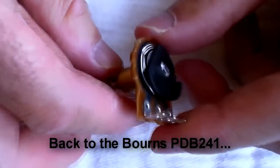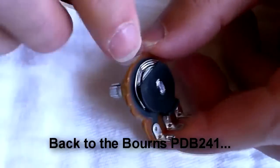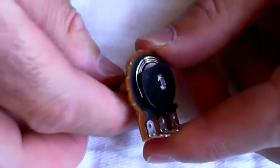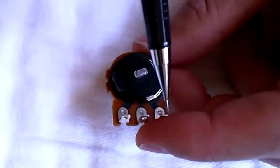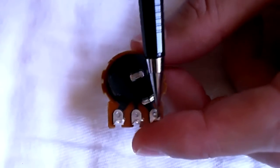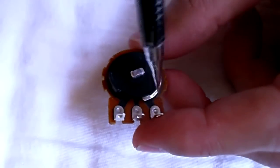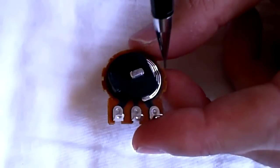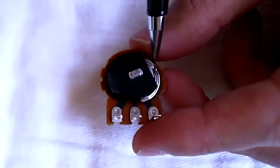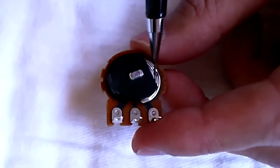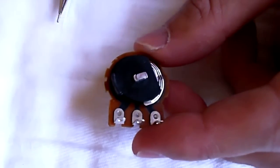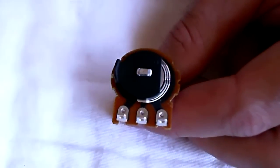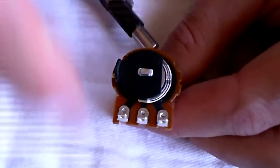Now the way the pot works, when you turn the shaft, as I mentioned, that little dimple in the wiper is touching that ring of material in only one place. What you're doing is making a connection between this lug right here, through that carbon material that's printed on the wafer, to the dimple in the wiper, which then connects to the center ring and out to the lug.